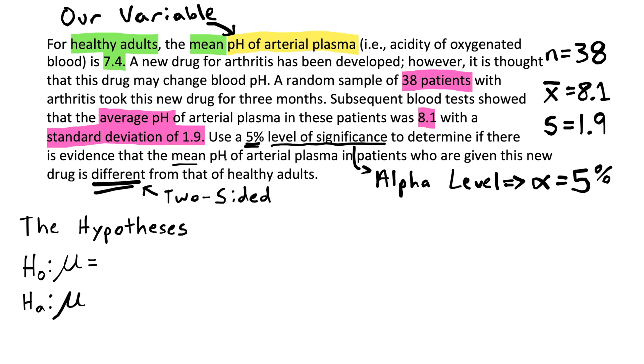And the null and alternative always describe the same parameter. And the null hypothesis always has an equal sign. And because we want to know if this mean is different from that of healthy adults, we are going to use a not equal to sign in our alternative. And so different from what? From that of healthy adults. What was that? Well that was this value given to us up here, this 7.4.